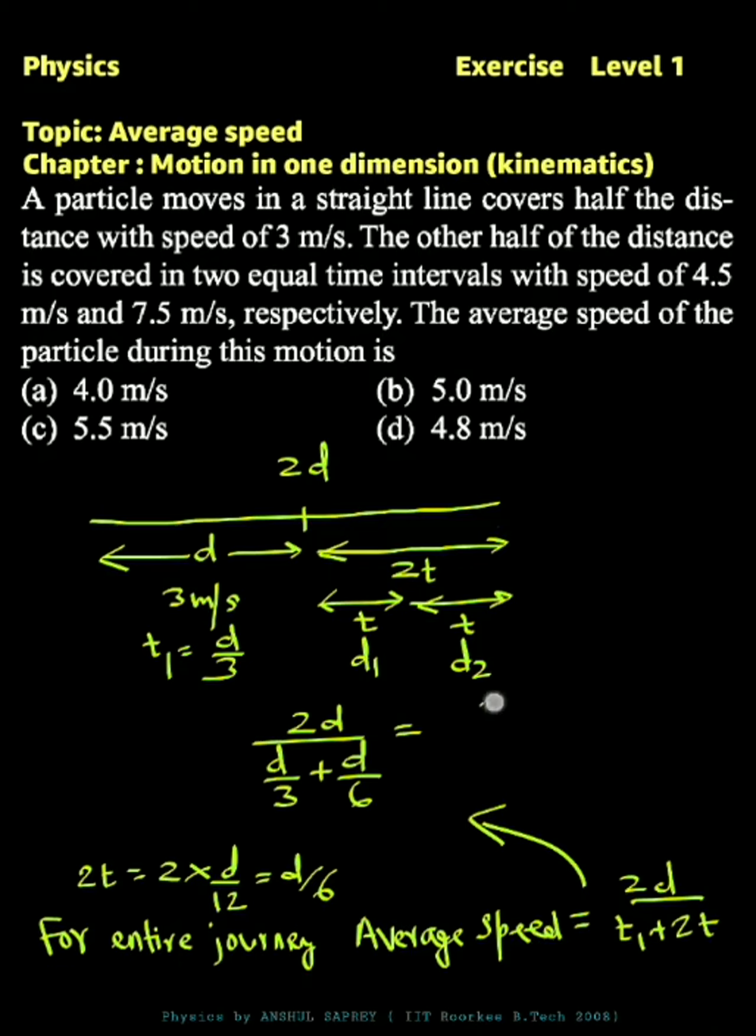Take d common, it will get cancelled. We'll get 2 divided by 1 by 3 plus 1 by 6, or 2 divided by 3 by 6, or it will be equal to 12 by 3, which is equal to 4. So the first option.